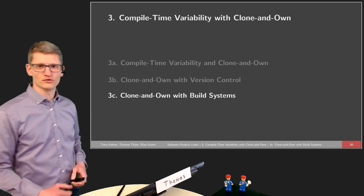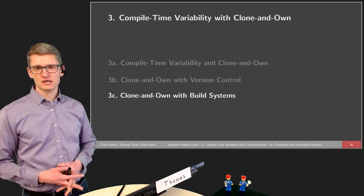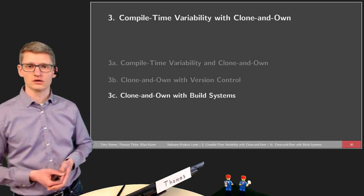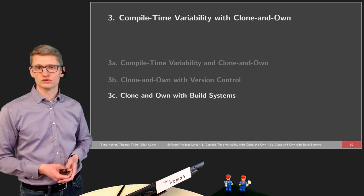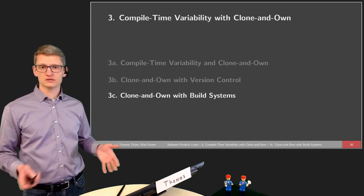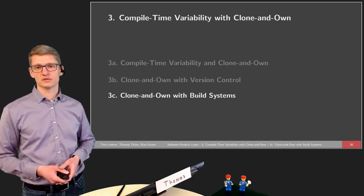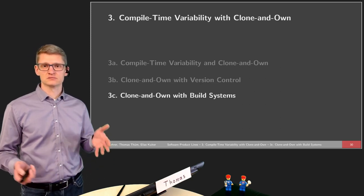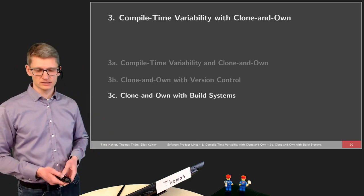This is the last part of our lecture on compile time variability with clone and own. In the previous parts we talked about what compile time variability is, what ad hoc clone and own is, and what clone and own has to do with version control systems and how version control can be used. In this last part, we would like to get more into the topic of clone and own in terms of build systems — how build systems can enhance the idea of clone and own as applied in practice.